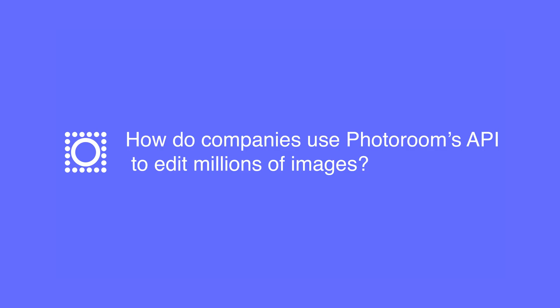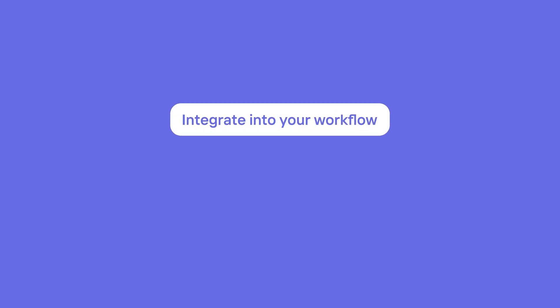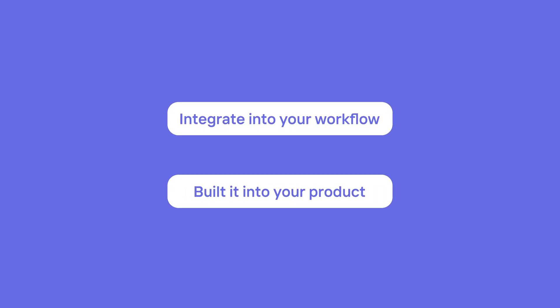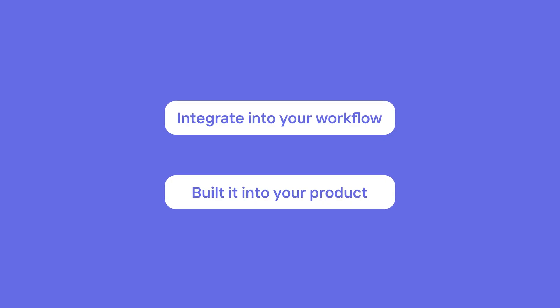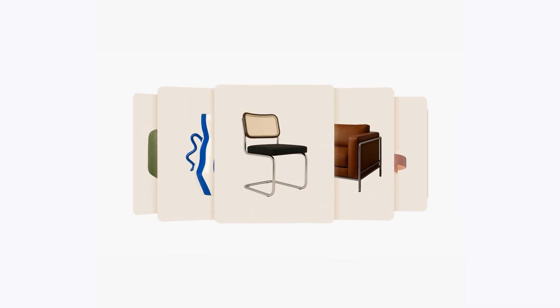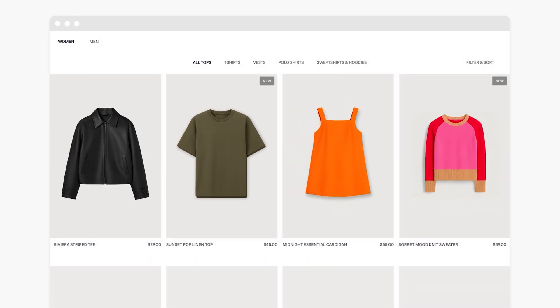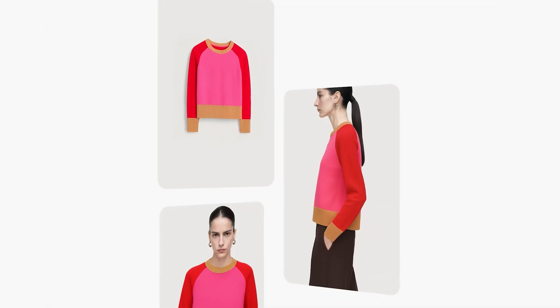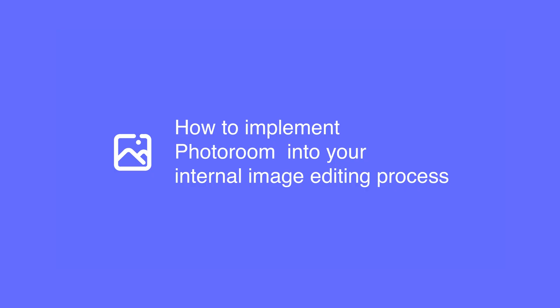How do companies use PhotoRoom's API to edit millions of images? PhotoRoom can be used by a company in two ways: you can either integrate it into your internal image editing process, or you can build it into your product so users can edit product images themselves, or do a combination of both. One key factor needs to be understood here: better images sell more products. It doesn't matter what industry or vertical, better images sell better. We browse so many listings when we shop online that the quality, clarity and reliability help us buy one product over another and buy them quicker.